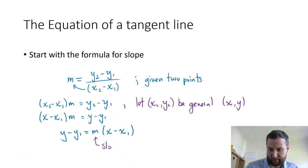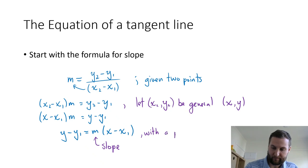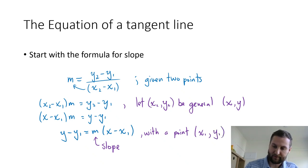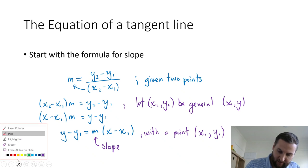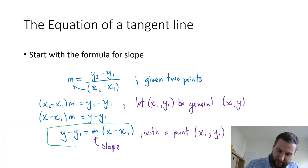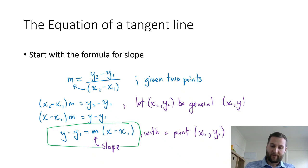This is now the equation of a line given a slope m and a point x1, y1. So rather than using two points, we just need one point and one slope. This is the general form for the equation of a line, and we're going to use it to calculate the equation of a tangent line.